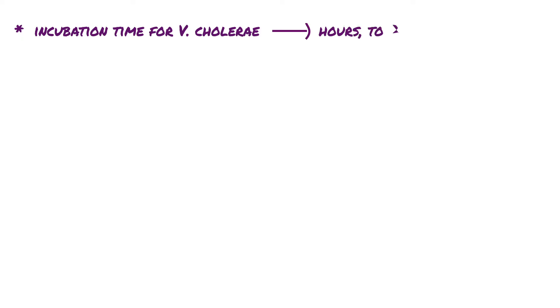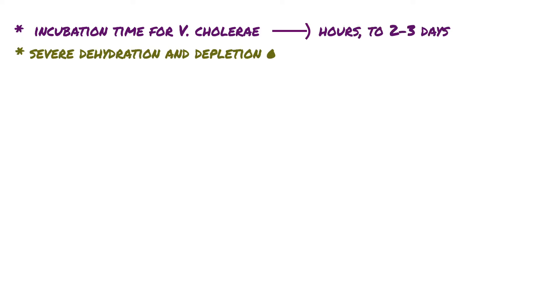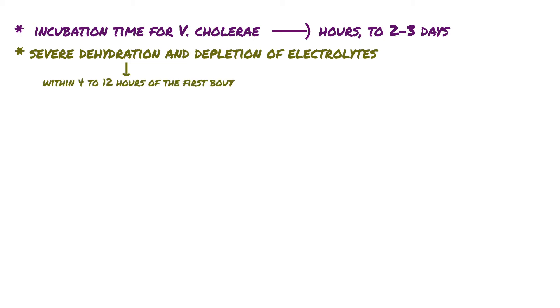While the incubation time for Vibrio cholerae can take hours to 2–3 days, severe dehydration and depletion of electrolytes can happen within 4–12 hours of the first bout of diarrhea.